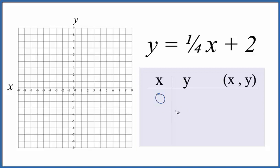I like to start out with zero for x. One-fourth times zero, that's zero. Zero plus two is two. Then it'd be nice if we had whole numbers here to graph. So how about we put four in for x. One-fourth times four is just one. One plus two is three.